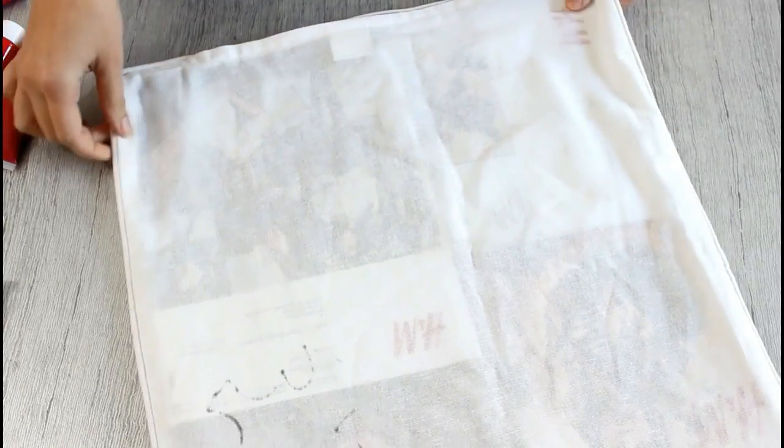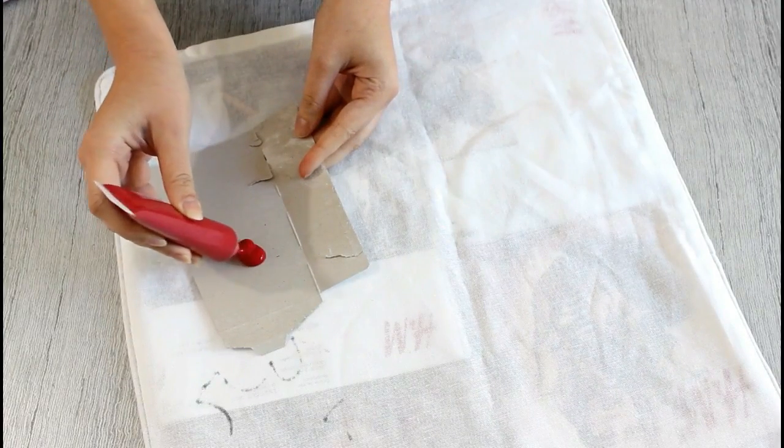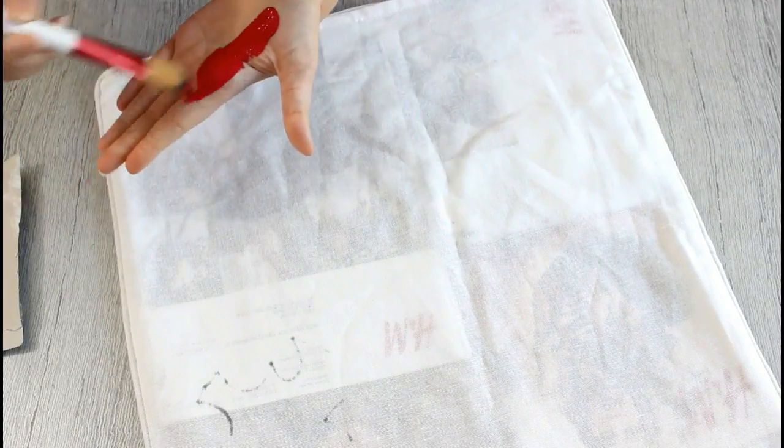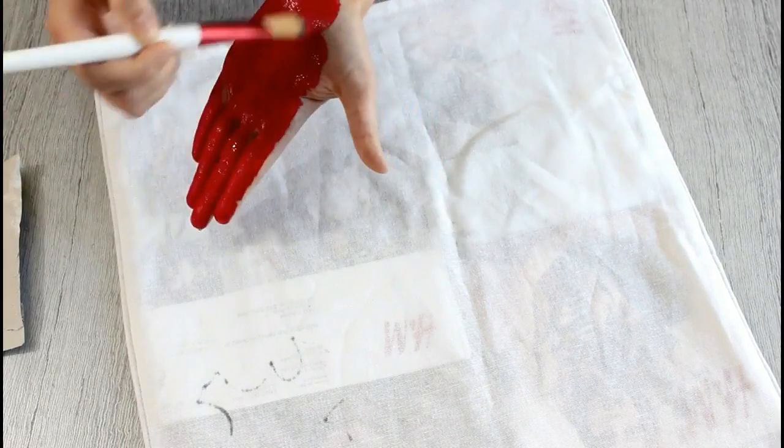As I said earlier, I'm going to place the magazine inside my cushion cover to avoid the paint transferring to the other side. With a brush, I'm going to apply the paint on my hand, which I'm going to stamp onto the cover.